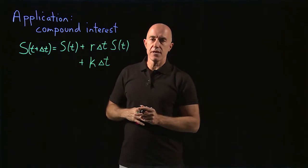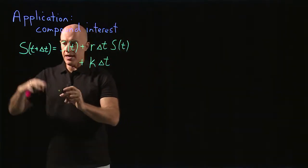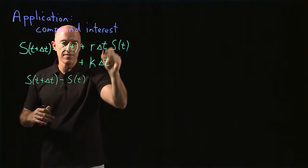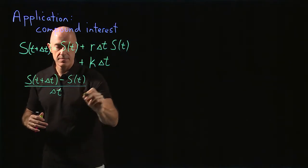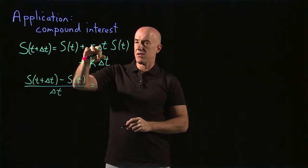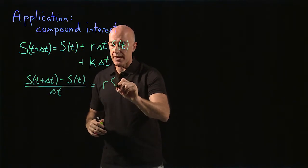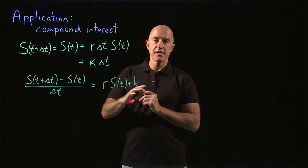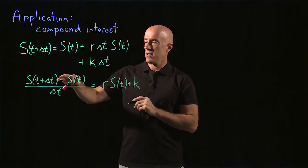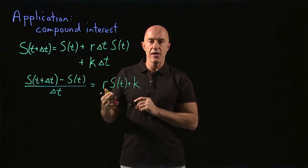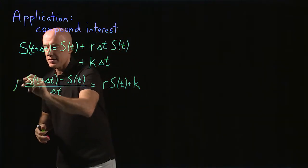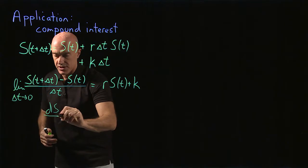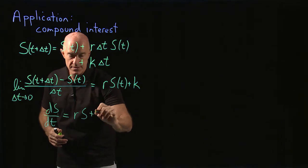We can take this equation and derive a derivative from it. We write s(t + delta t) minus s(t), divide through by delta t, and on the right-hand side we're left with r·s(t) plus k. To get the differential equation we need continuous compounding — rather than once a month, we take the limit as delta t goes to zero, and we get the differential equation ds/dt = r·s + k.